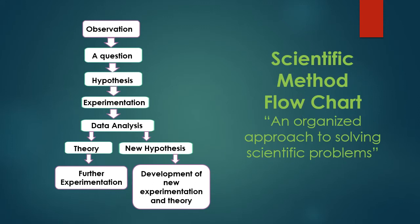Now let's look at the scientific method — an organized approach to solving scientific problems that all scientists use in some way. It always starts with observation. A classic example is Sir Isaac Newton discovering gravity: it started with the observation of an apple falling. From there he came up with a question — why did the apple fall? Is something pulling it to earth, or pushing it?